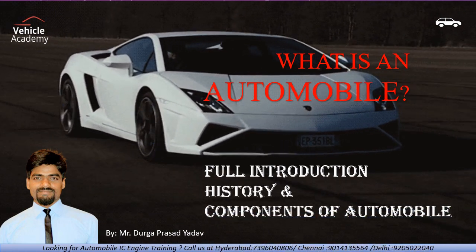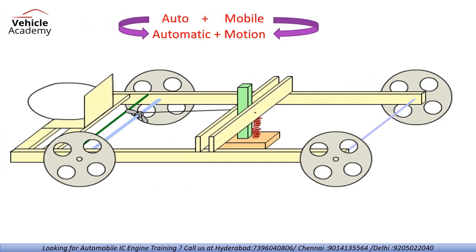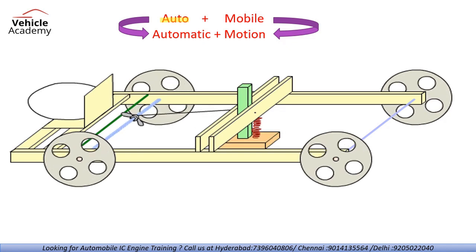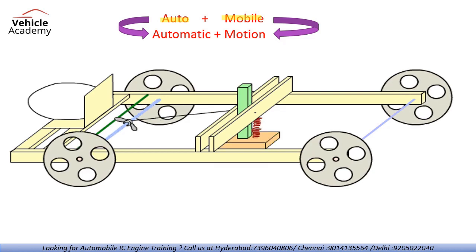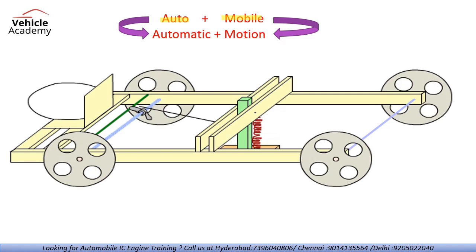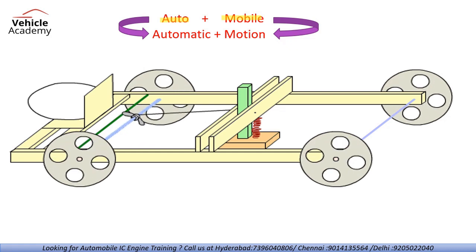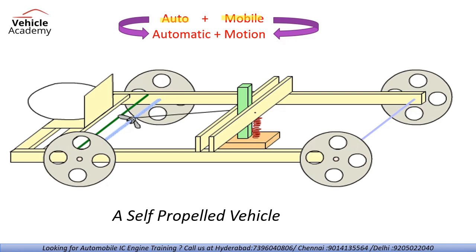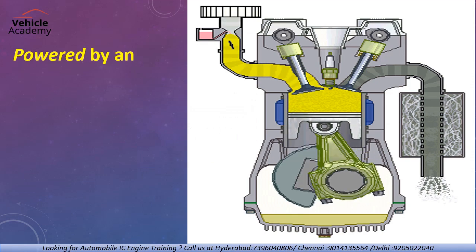Automobile is made by two words: auto plus mobile. Auto means automatic and mobile means motion. When a vehicle has automatic motion, that is called automotive or automobile, and it should be on road. The automatic motion on road is called automobile. If you need the scientific definition of an automobile: a self-propelled vehicle means a vehicle which will be propelled by itself.